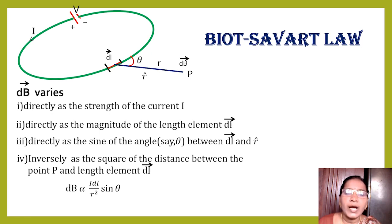So it could be written as dB is proportional to I DL sin theta divided by R squared. This proportionality constant could be written as dB equals K I DL sin theta by R squared.